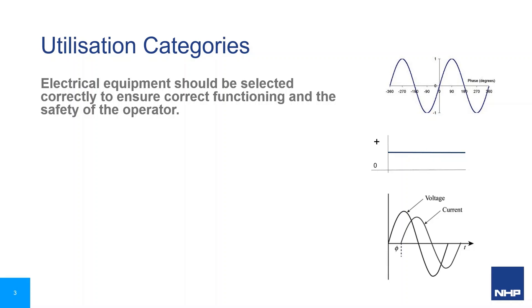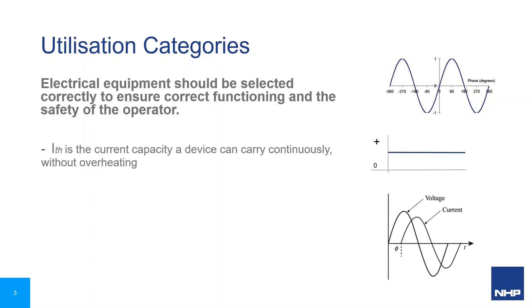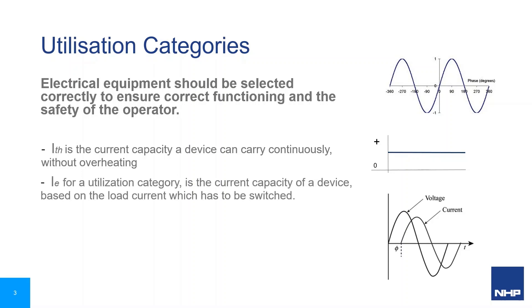The selection of a device suitable to fulfil the required switching functions is based on the characteristics of the load. The most common current rating for a device is ITH, which is a thermal rating for its capacity to carry a constant current value for an extended period of time without overheating. However, the loading of contacts by current and voltage when circuits are made and broken during switching is critical, with the making and breaking current for a resistive load significantly different to those of an induction motor. So utilisation categories are used.